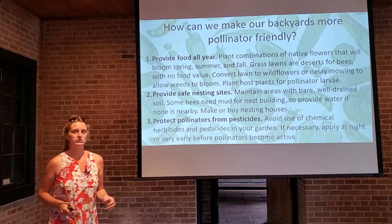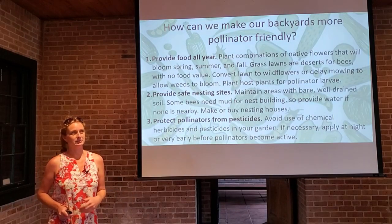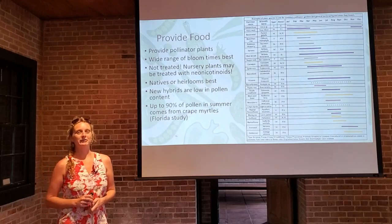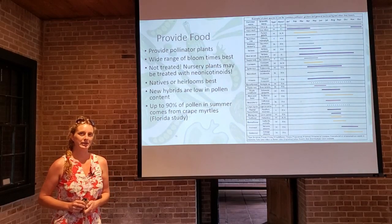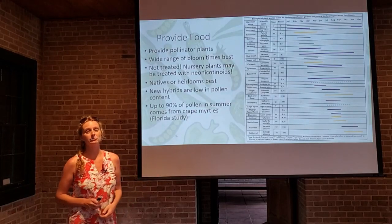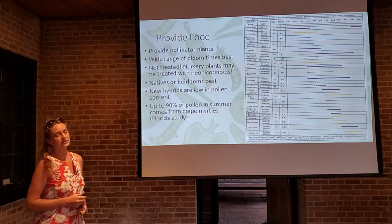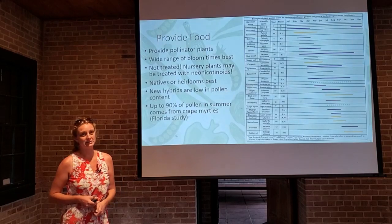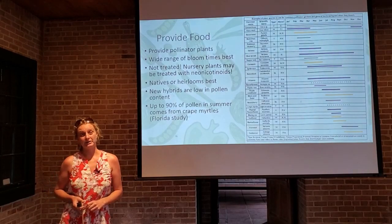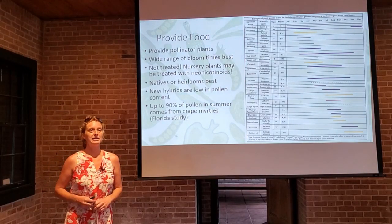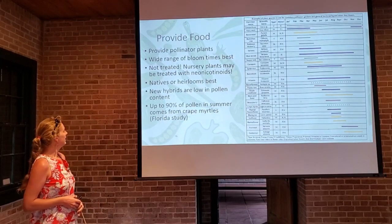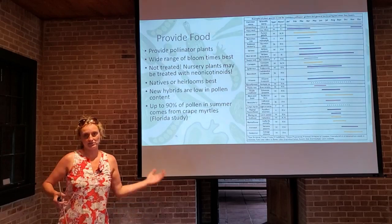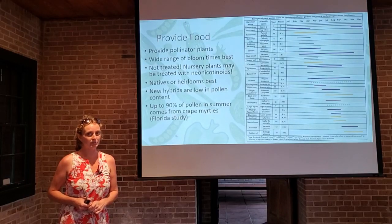Third, protect pollinators from pesticides. Even if you're an organic gardener spraying neem oil, insecticidal soap, or spinosad regularly, it's best to use those products in the early evening or early morning before pollinators are out foraging. Spraying in the early evening is ideal — pollinators are back at their hives, and the product has eight to ten hours overnight to dry or be absorbed by the plant.